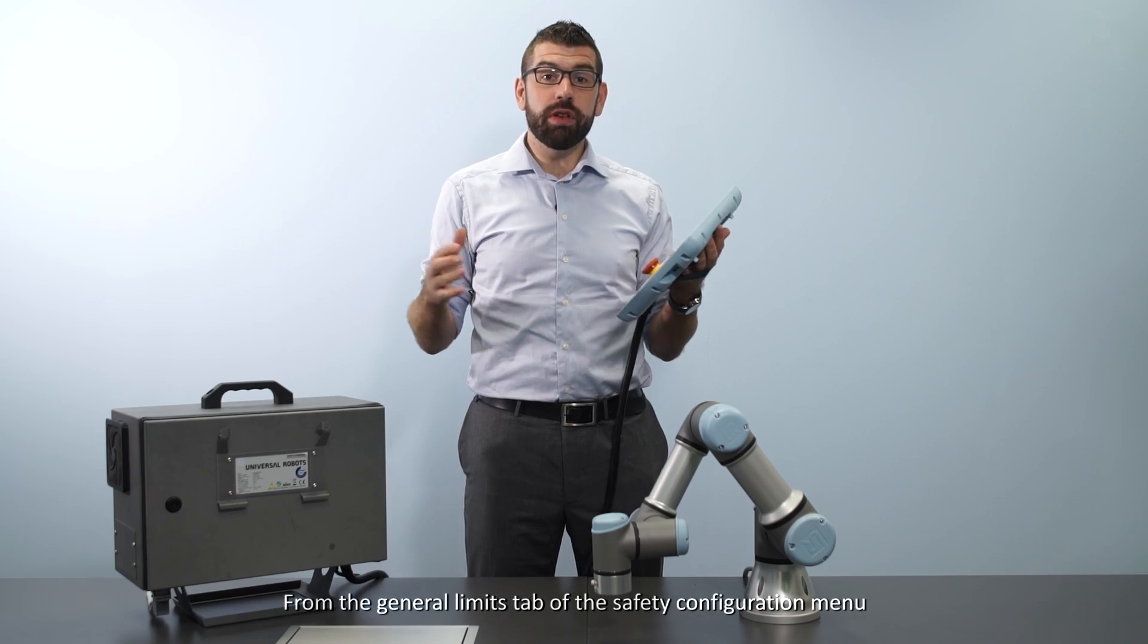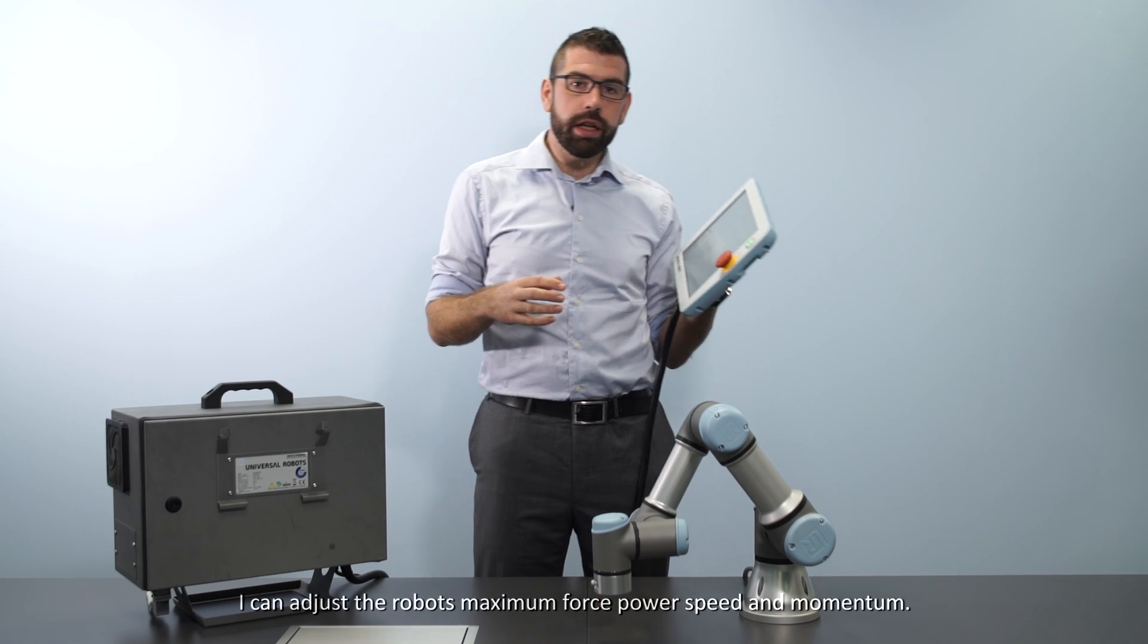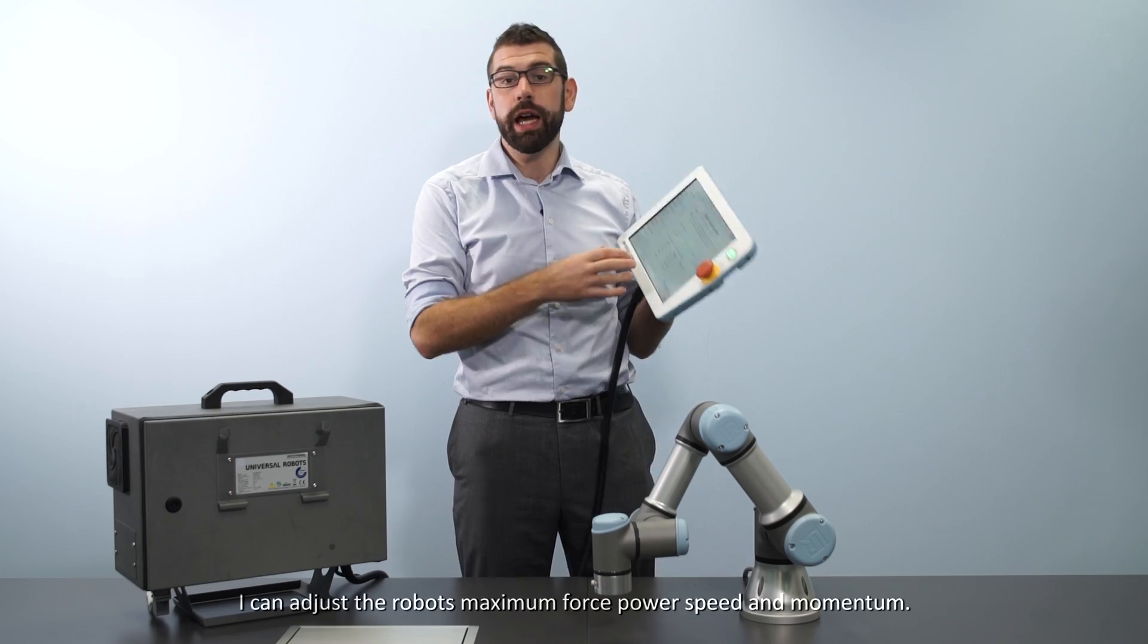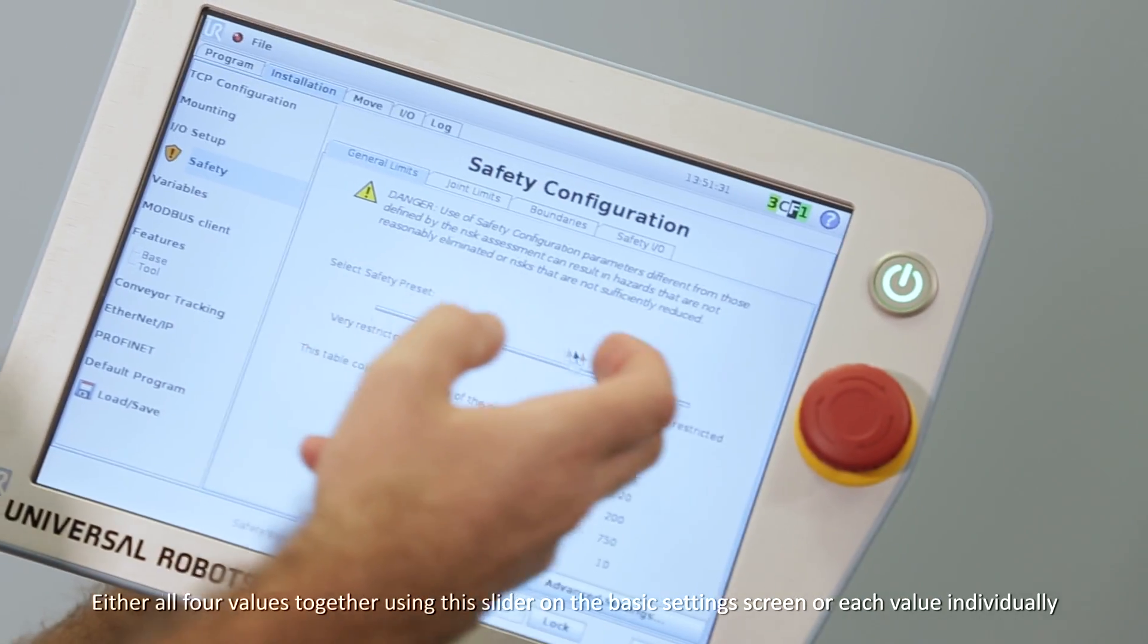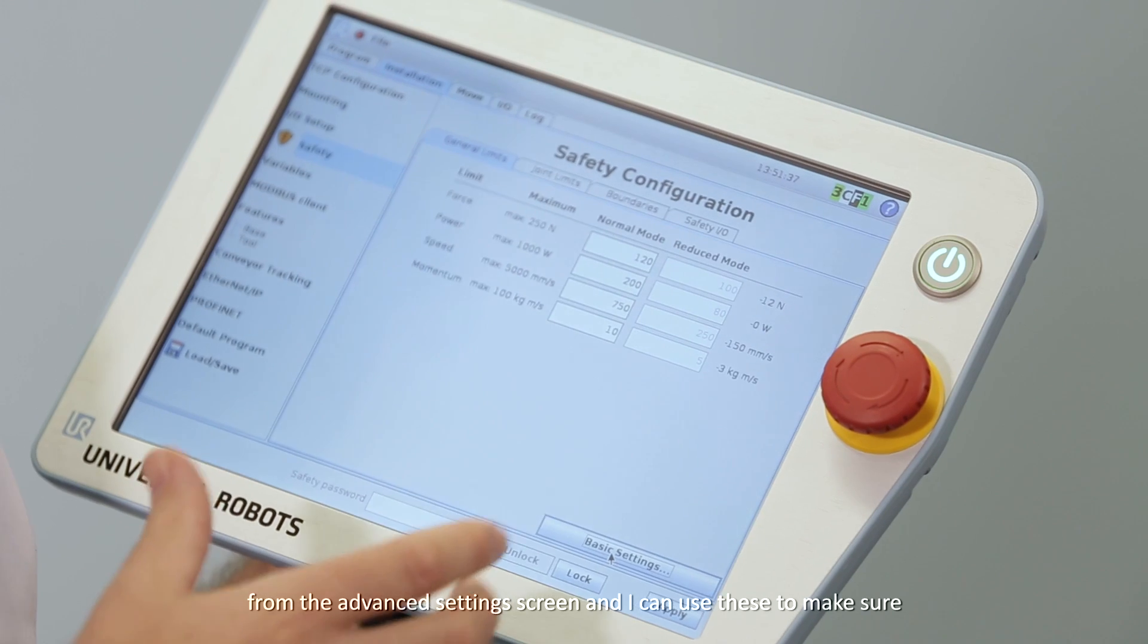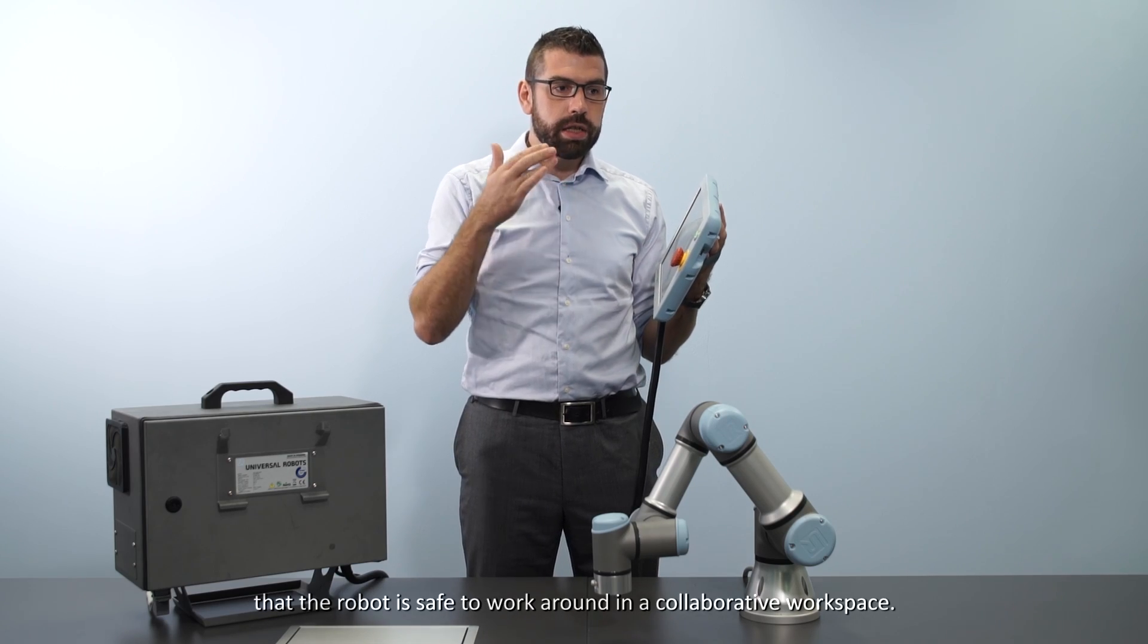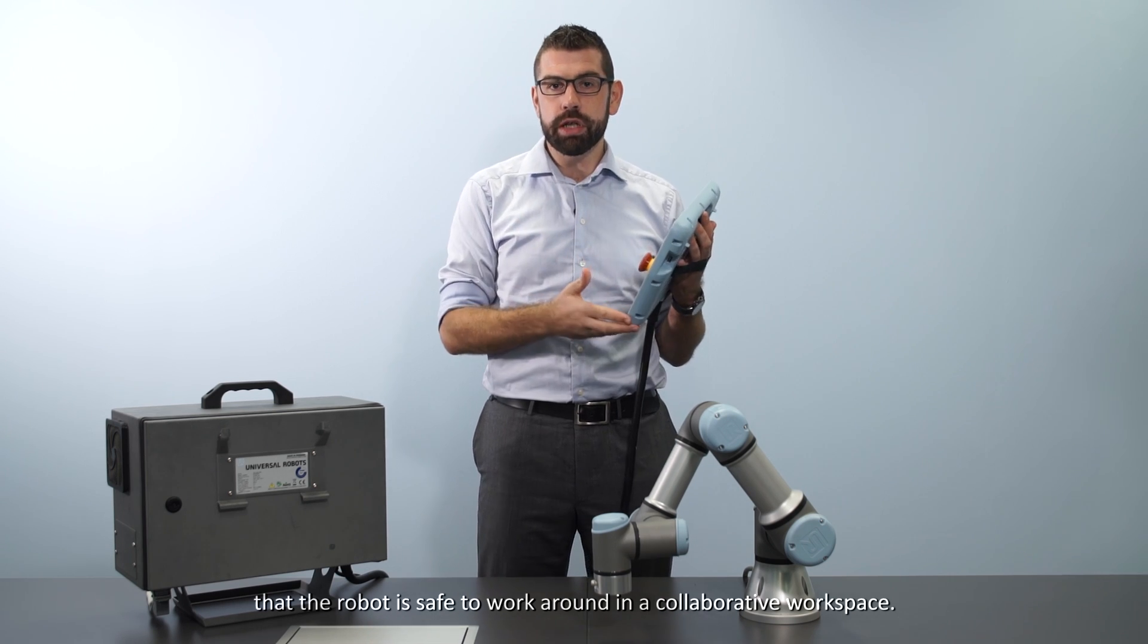From the general limits tab of the safety configuration menu, I can adjust the robot's maximum force, power, speed, and momentum. Either all four values together using this slider on the basic settings screen, or each value individually from the advanced settings screen. And I can use these to make sure that the robot is safe to work around in a collaborative workspace.